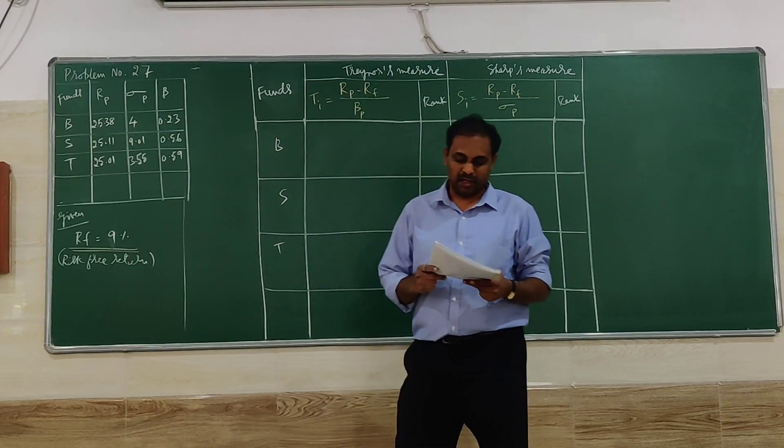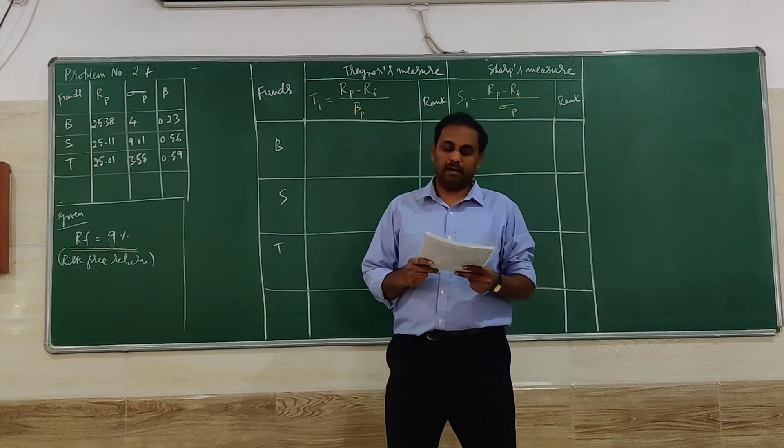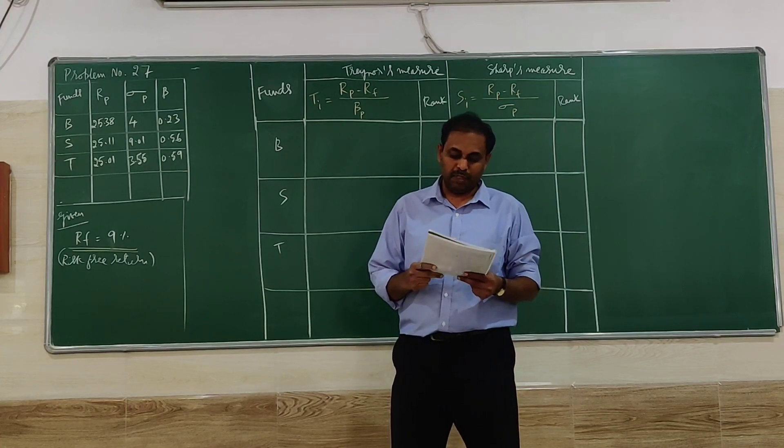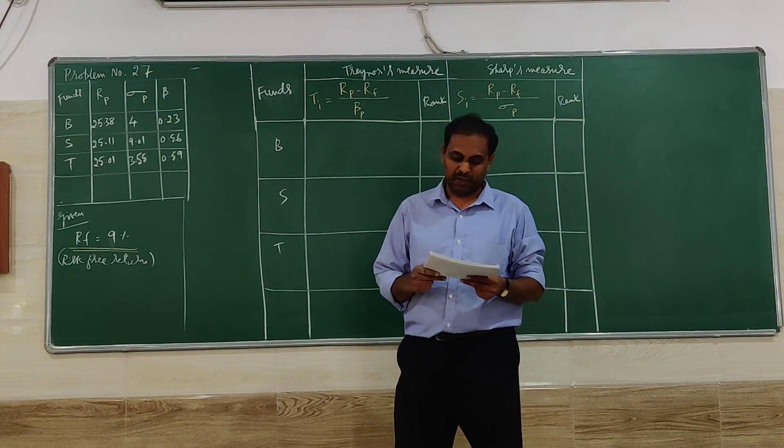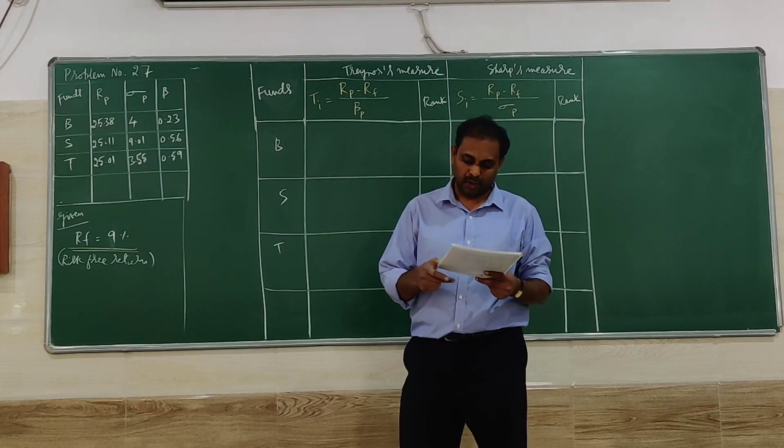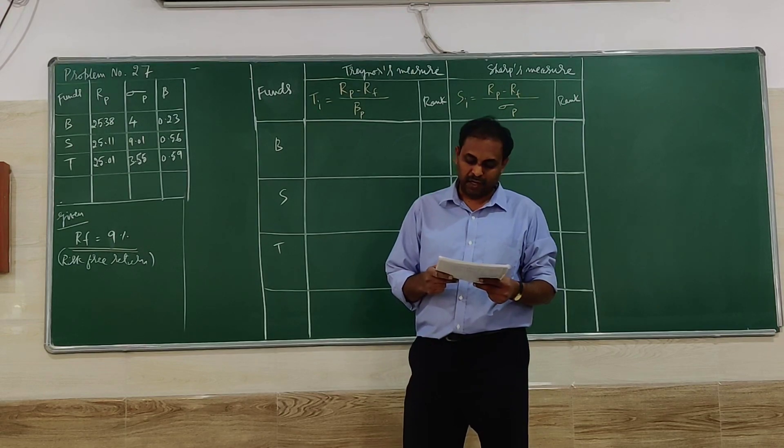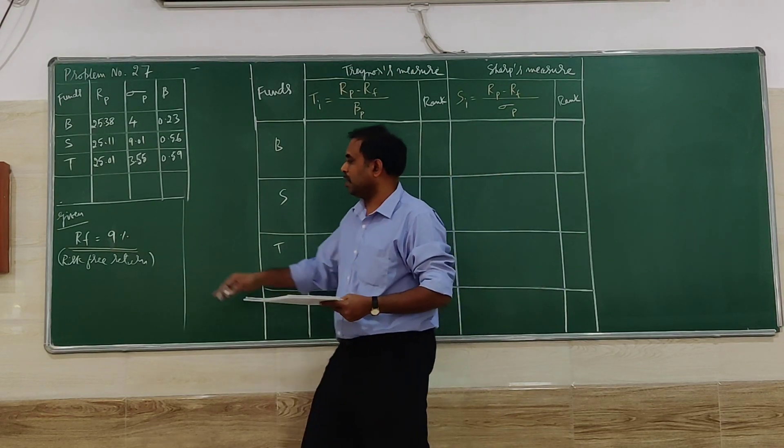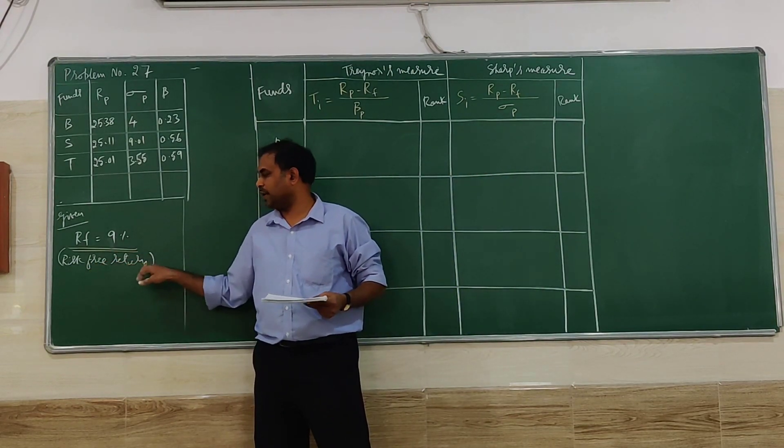Welcome to problem number 27. The following information is given about three mutual funds for the six months ending September 2021. The risk-free rate of return is assumed to be nine percent, so rf equals nine percent.